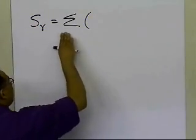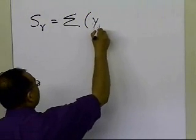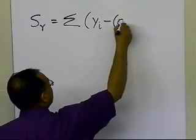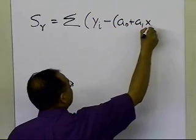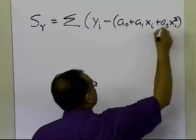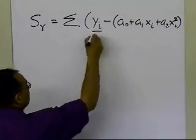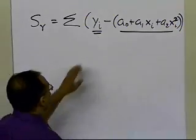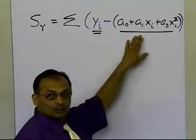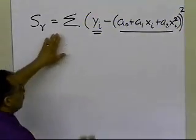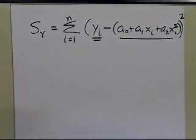If you look at a particular value xi, the predicted value is yi, and the value from the polynomial at xi would be a0 + a1xi + a2xi². The difference between the observed value and the predicted value is the residual at that point. I square the residual and sum all of them over all n data points — that gives the sum of the square of the residuals.